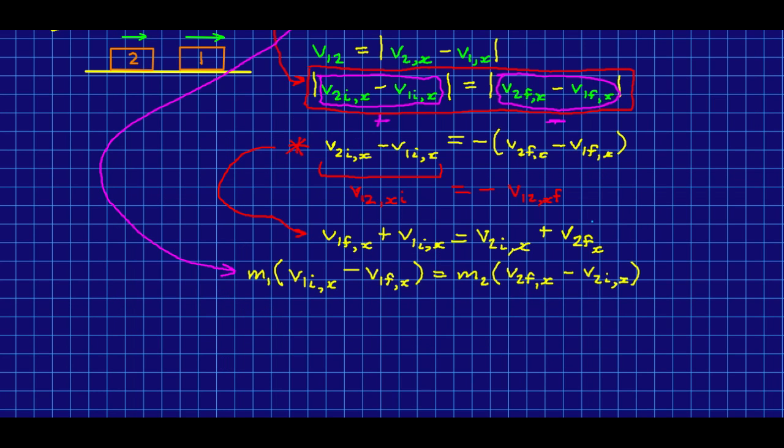Next, I'm going to collect the 1s on one side and the 2s on the other side in my momentum equation. And I'm going to factor out the ms as I do it. So now I'm going to call these equations 1 and 2. And what I'm going to do is I'm going to multiply them together. In other words, I'm going to multiply the right side of equation 1 by the right side of equation 2 and the left side of 1 with the left side of 2. So that gives me this.